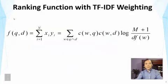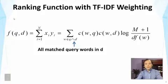So this is the formula. If you look at the formula carefully, you will see it involves a sum over all the matched query terms. Inside the sum, each matched query term has a particular weight, and this weight is TF-IDF weighting.